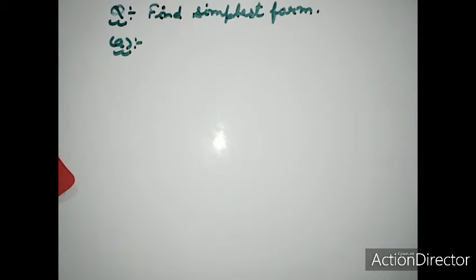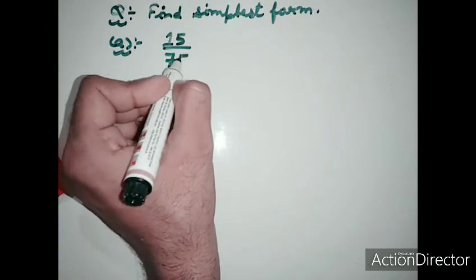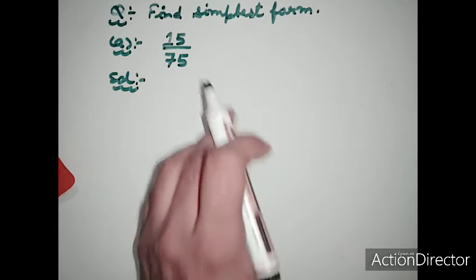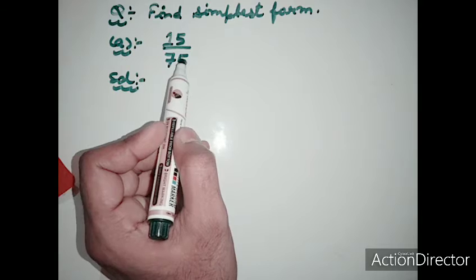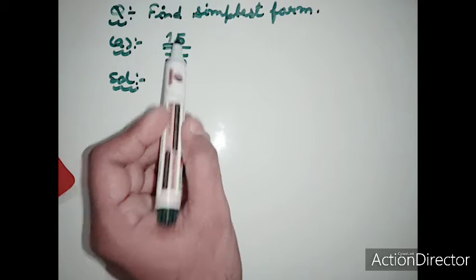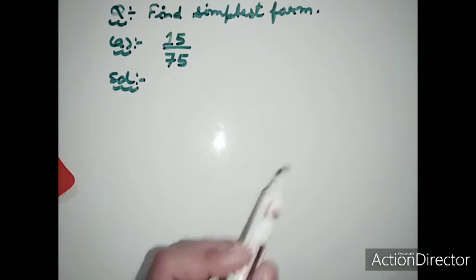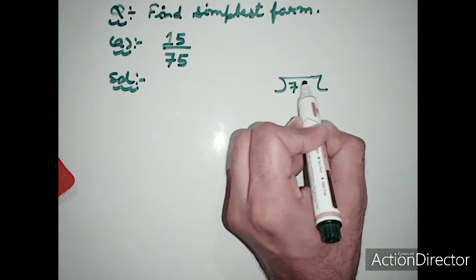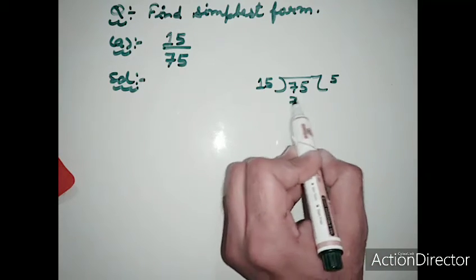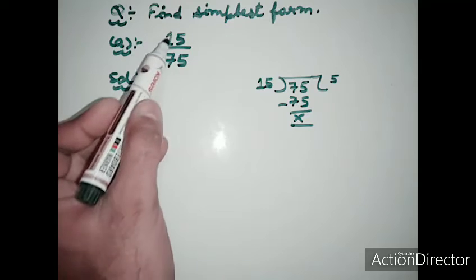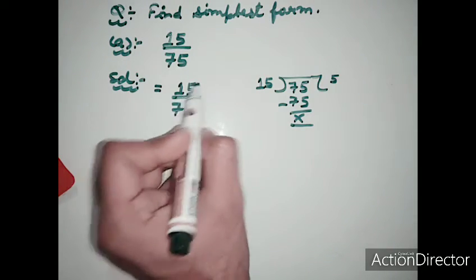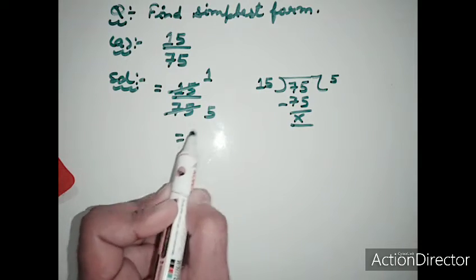Find the simplest form of 15 upon 75. When finding the simplest form, there are two methods: divide both numbers by a common divisor, or find the SCF first. We observe that 75 divided by 15 equals 5, so both numbers are divisible by 15. Dividing: 15 ones are 15 and 15 fives are 75, giving us 1 upon 5.